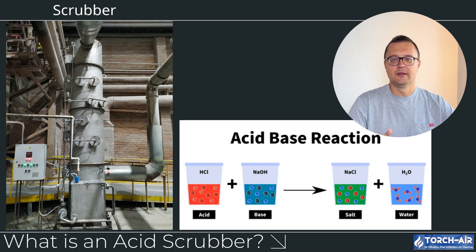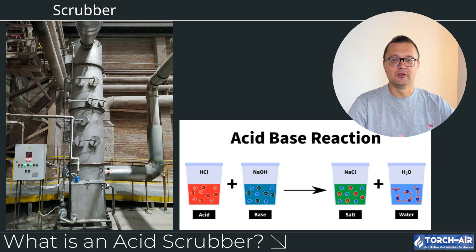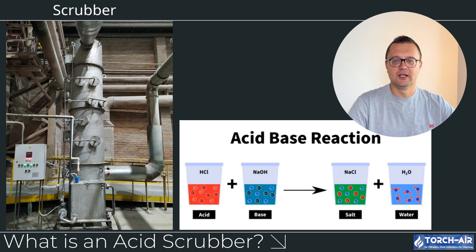What is an acid scrubber? An acid scrubber is a type of wet scrubber used to remove acidic gases from industrial exhaust streams. These systems work by introducing a scrubbing liquid — typically a basic or alkaline solution like caustic soda (NaOH) — into the gas stream. The scrubbing liquid reacts with the acidic gases, neutralizing them and turning them into less harmful compounds, which can then be safely removed or treated. The main objective is to protect the environment by controlling emissions and ensure your plant meets regulatory standards for air quality, whether you're dealing with SO2 from power plants or HCl from chemical processing. Acid scrubbers are your frontline defense.